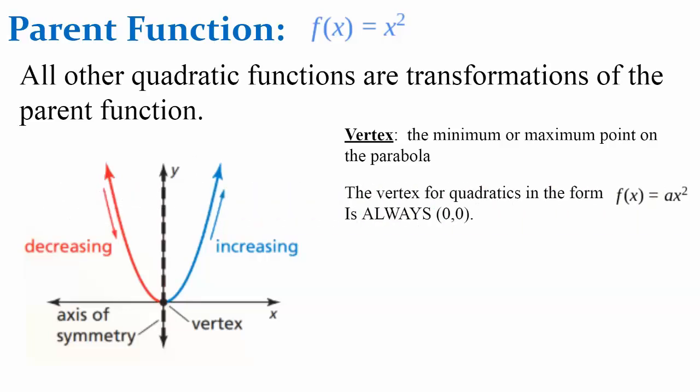The vertex for all quadratics in the form we're talking about today, f of x equals ax squared, is always the origin zero, zero.